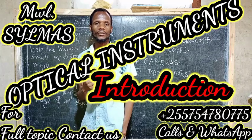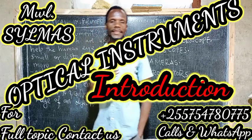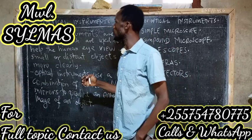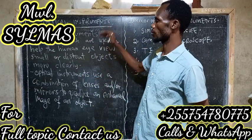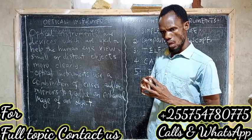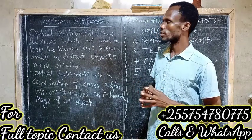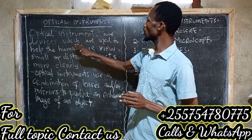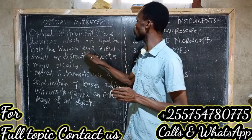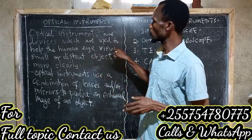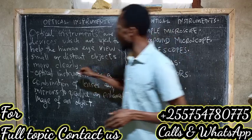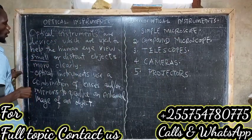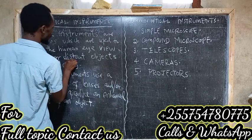Today, we are definitely going to discuss about this topic which is called optical instruments. Optical instruments are the devices which are used to help the human eye view smaller things, smaller objectives, or distant objectives.